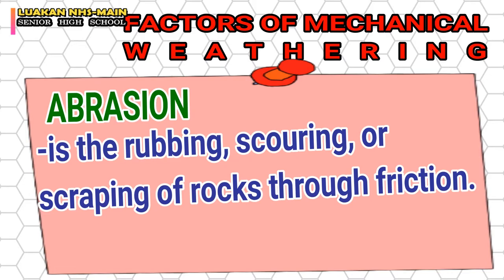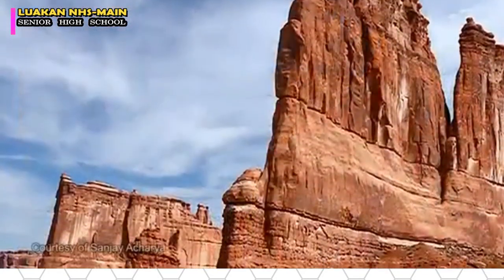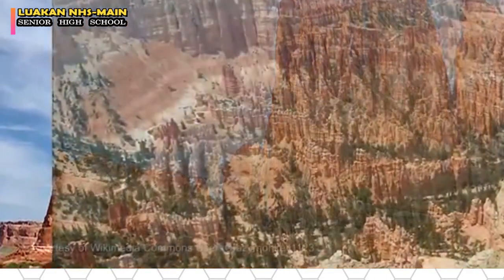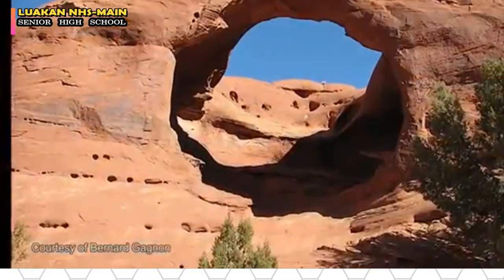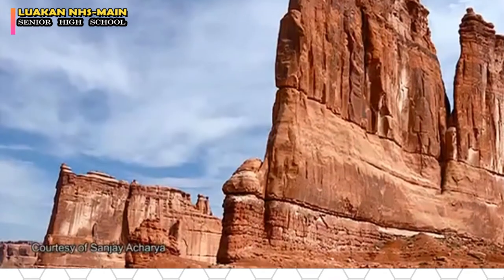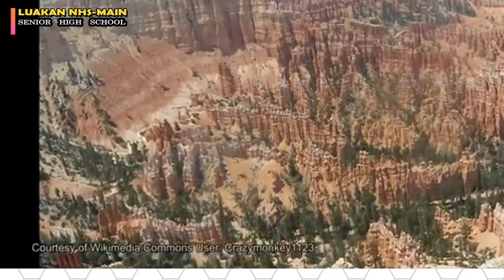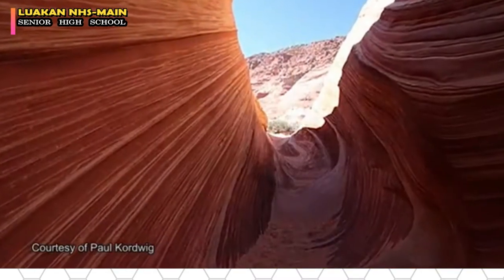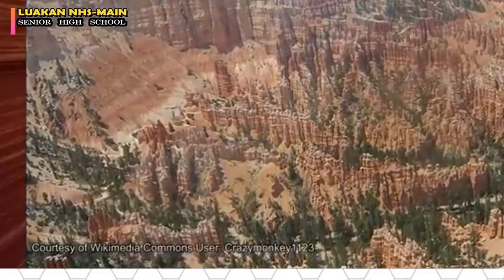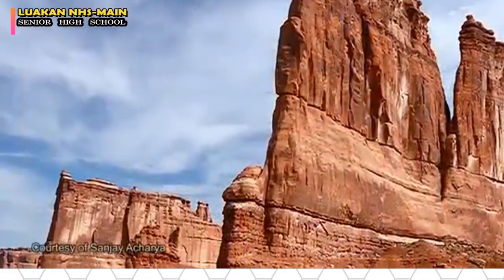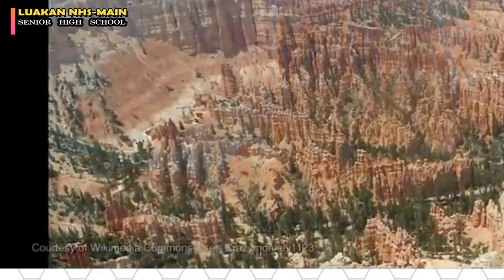The fourth factor is abrasion — the rubbing, scouring, or scraping of rocks through friction. Abrasion is caused by other agents in the environment, like water and air, acting on rocks. Unlike the other types of agents, abrasion would take a little longer to break down or change the physical features of a rock. Imagine wind blowing against a rock for thousands of years — the features of the rock gradually change. Water constantly dripping on a rock can also change its physical features.